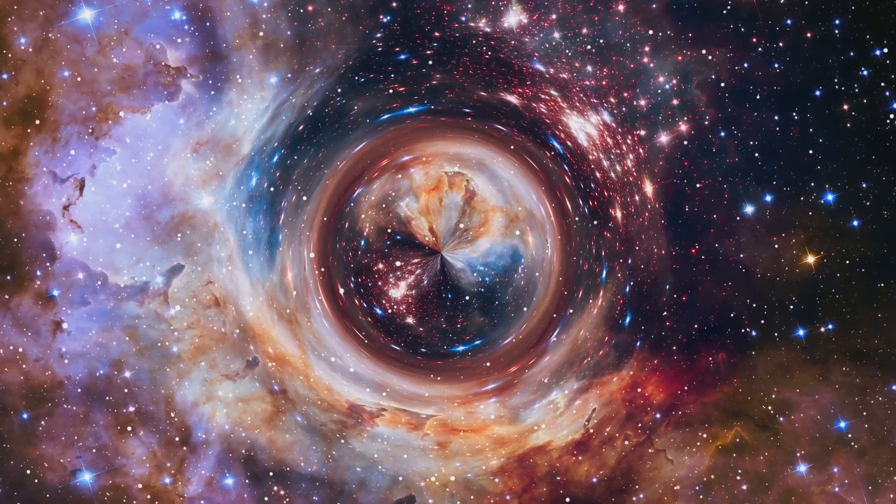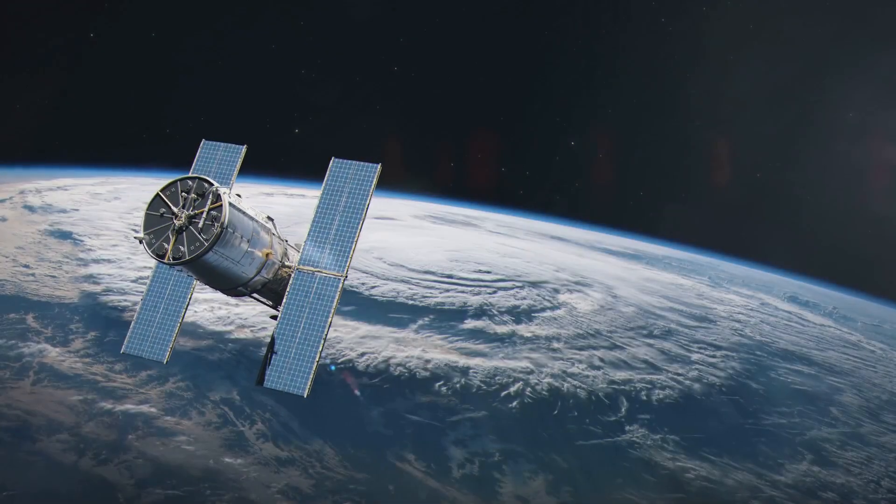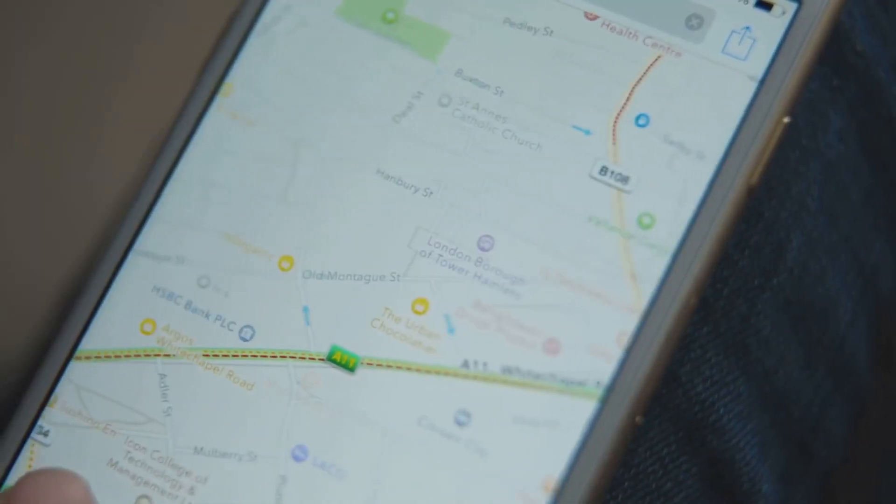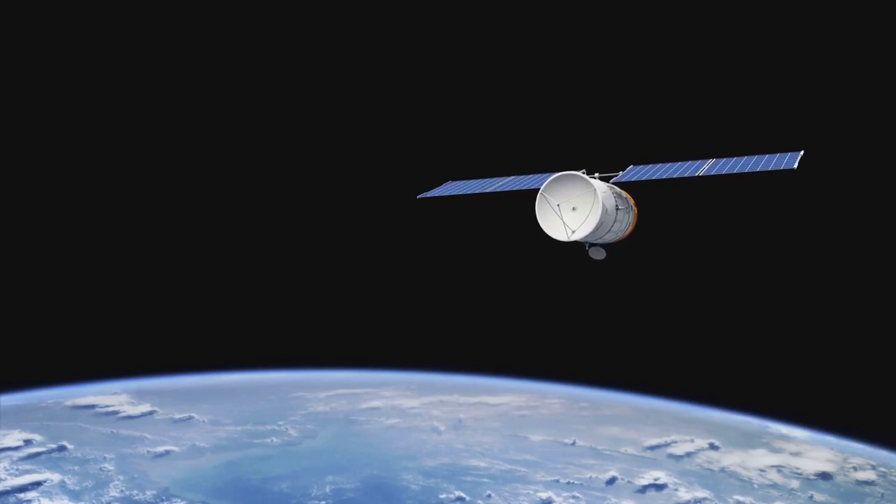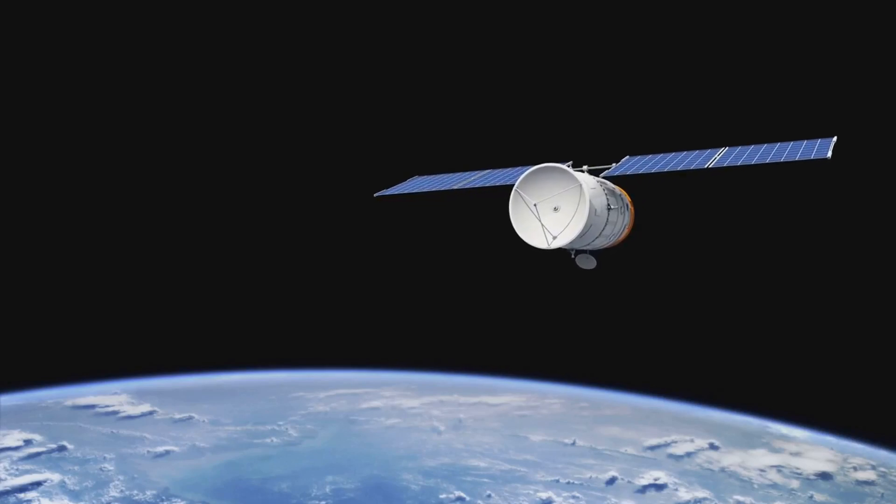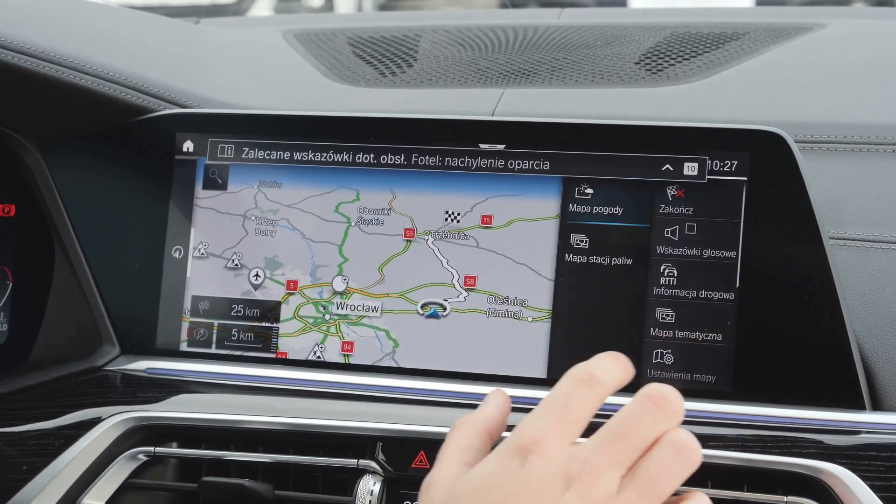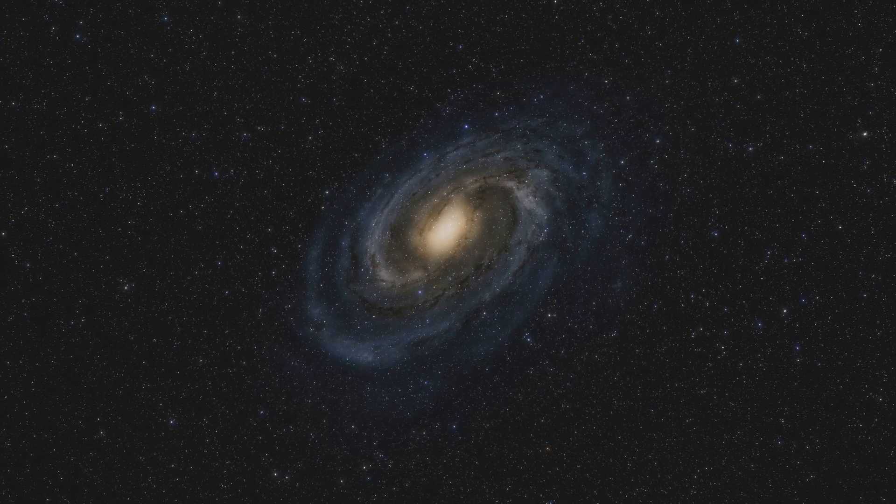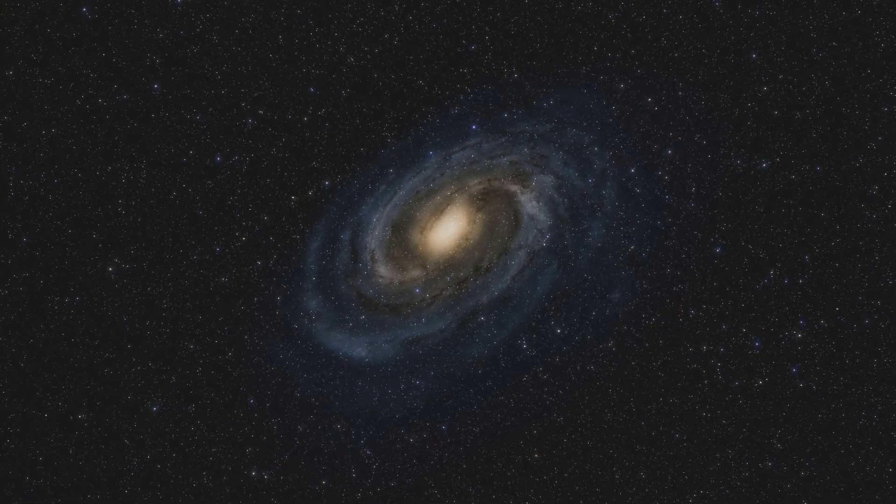Time dilation isn't just a theoretical concept. It has real-world implications. GPS satellites, orbiting Earth at high speeds, have to take time dilation into account for accurate positioning. The faster they move, the slower their onboard clocks run relative to clocks on Earth. Without accounting for this, GPS systems would drift by several miles each day, rendering them useless. So the next time you use your phone to navigate, remember that you're harnessing the power of Einstein's mind-bending theory.